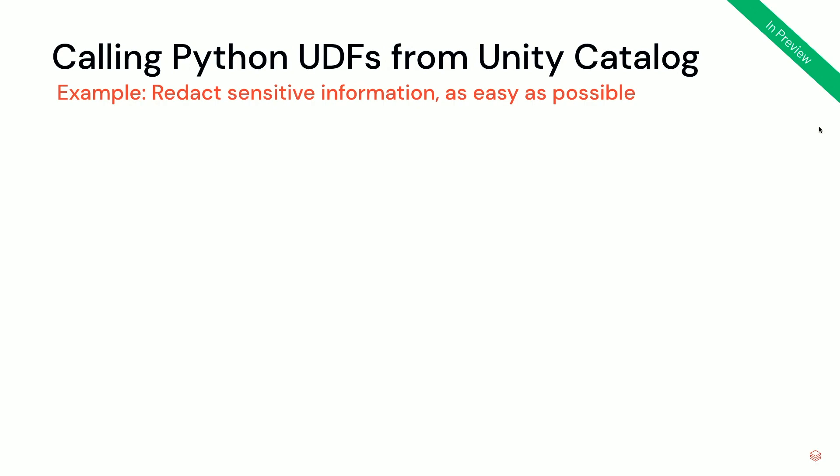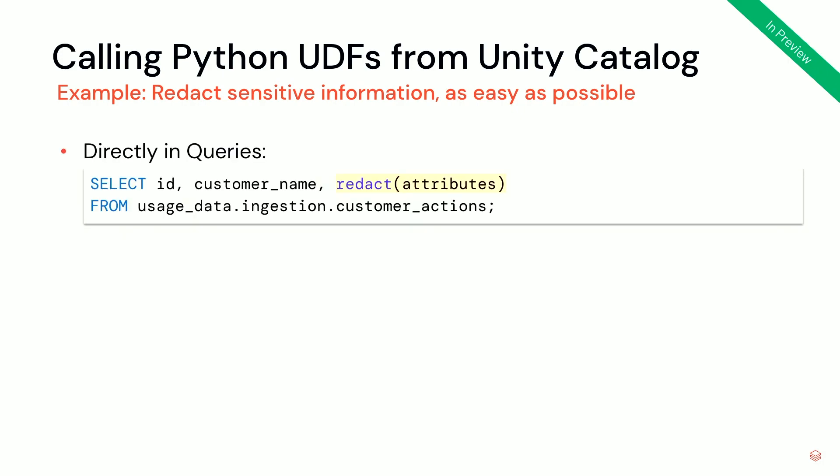Now you have this UDF — what do you do with it, how do you use it? There are multiple ways. The easiest and most straightforward is you directly use it in a query, wherever you would use a SQL function or SQL UDF. Because I'm already using the same schema and catalog, I can just call it 'redact' here. If it's from a different catalog, you would need to use the fully qualified name — for example, something like 'use_its_data.default.redact'. That is how you use it directly from a query.